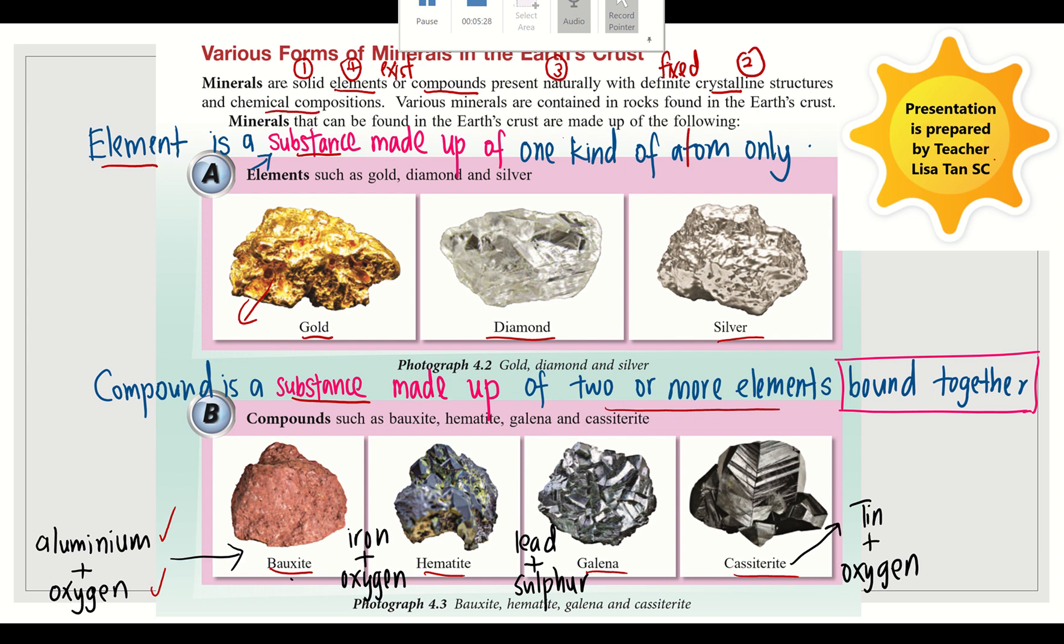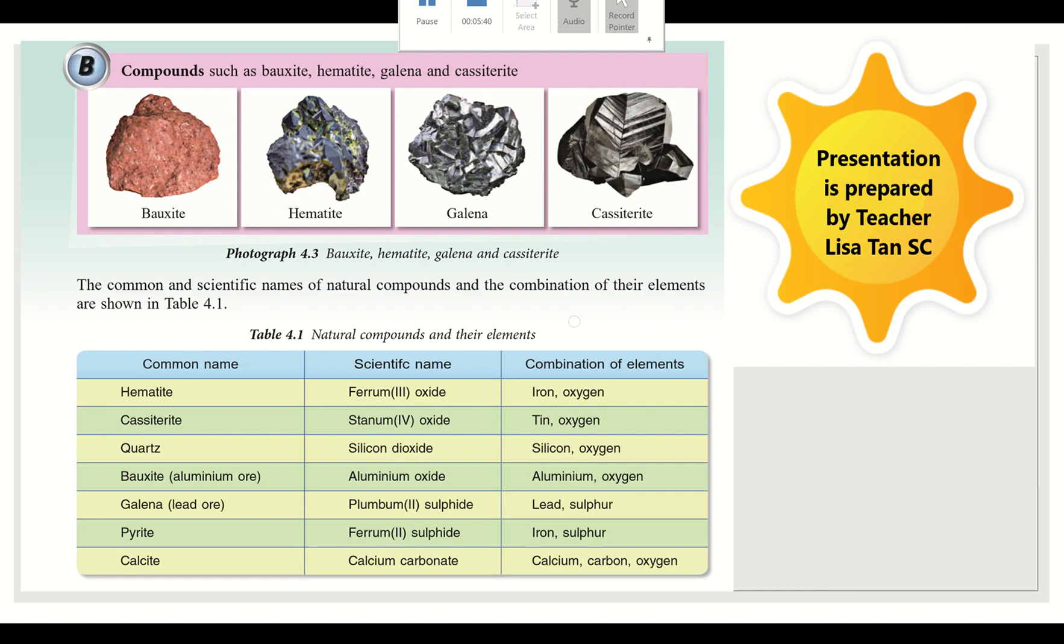Number five, mineral have fixed chemical compositions. The chemical composition is fixed. The table shows natural compounds and their elements. Number one, hematite. Scientific name, ferrum-3-oxide. The elements can be found in the hematite are iron and oxygen.